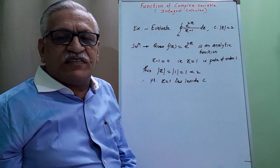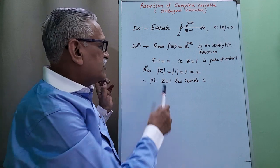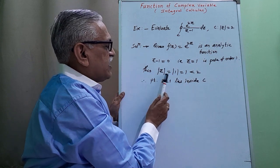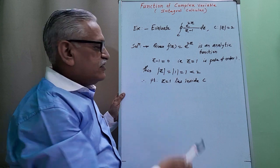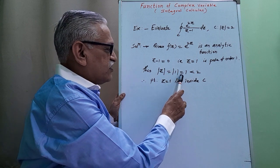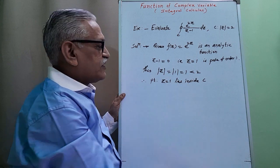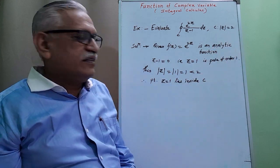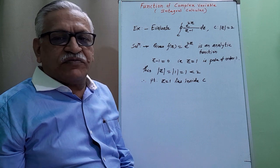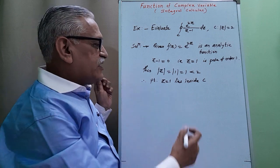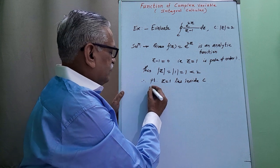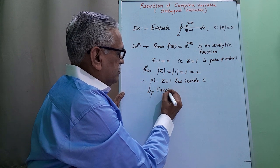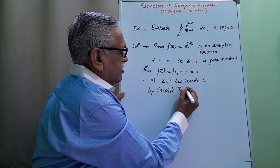Then we check whether that point lies inside, on, or outside the curve |z| = 2. Therefore, |z| at z = 1 gives us |1|. The absolute value of 1 is 1, and 1 is less than 2, meaning the point lies inside C. As the point lies inside C, by Cauchy's integral formula: